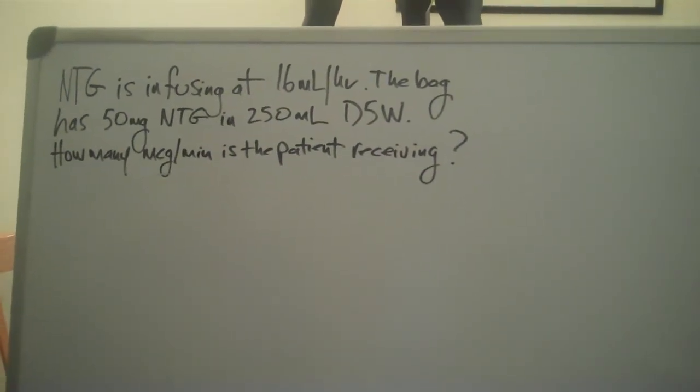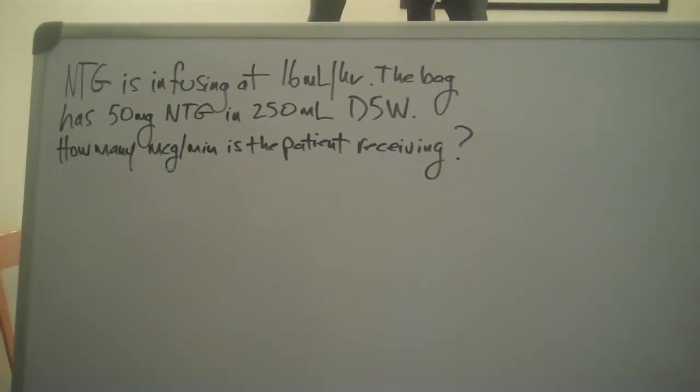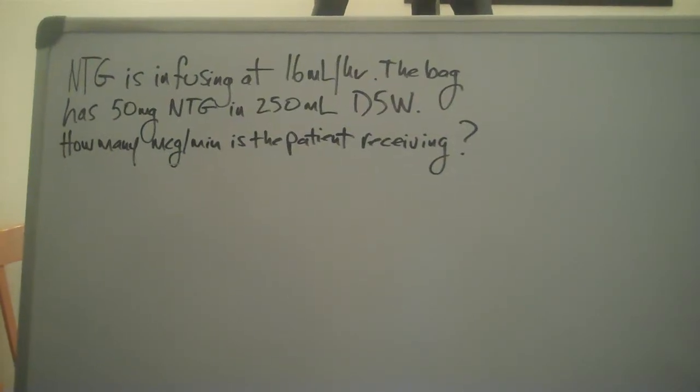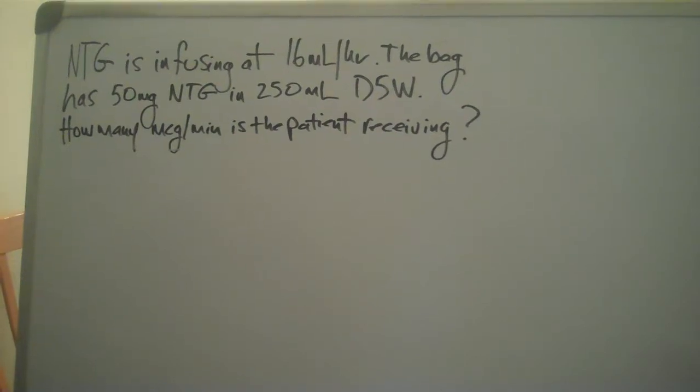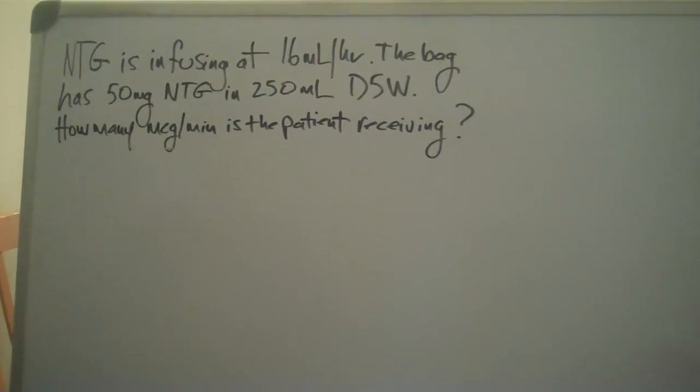Nitroglycerin is infusing at 16 milliliters an hour. The bag has 50 milligrams of nitroglycerin in 250 milliliters of 5% dextrose and water. How many micrograms a minute is the patient receiving?